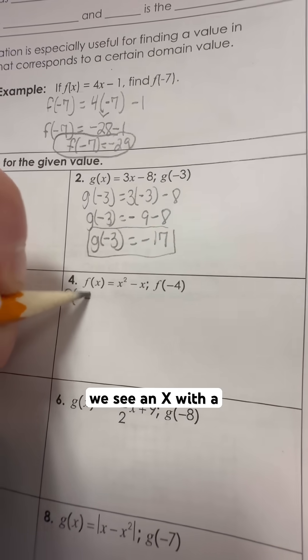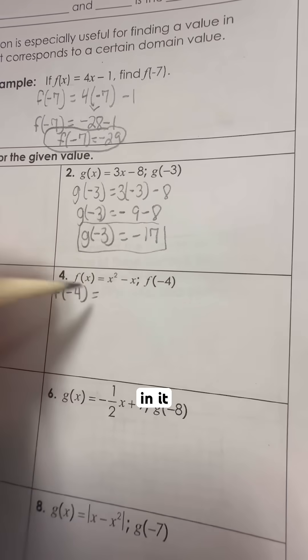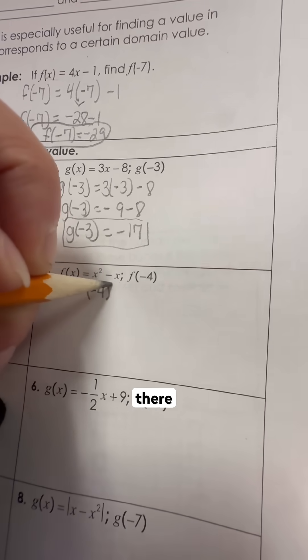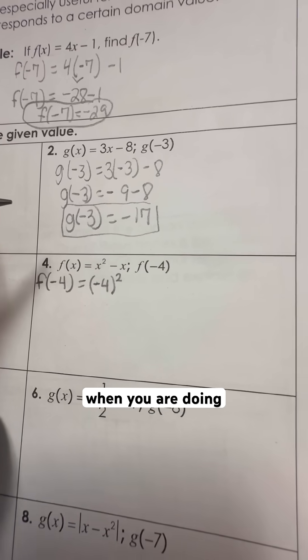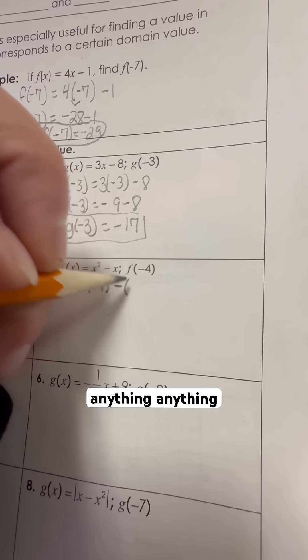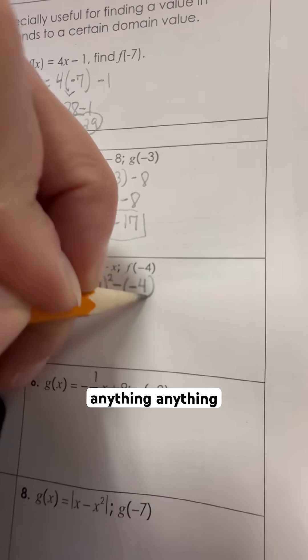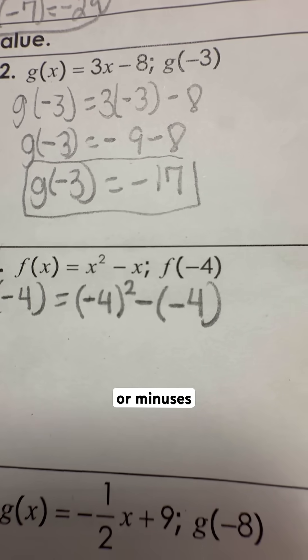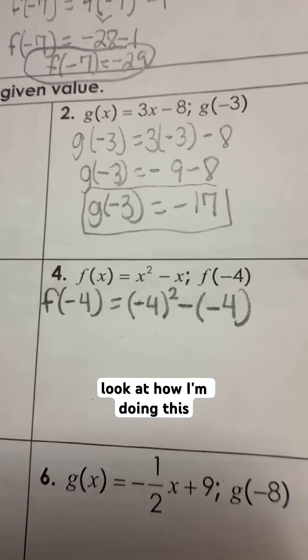So in this case we're replacing anywhere we see an x with a negative 4 in it. So here I'm going to replace the negative 4 there. Now it's important when you are doing exponents that you make sure you substitute anything, any kind of exponents or minuses, and there's negative numbers. Look at how I'm doing this.